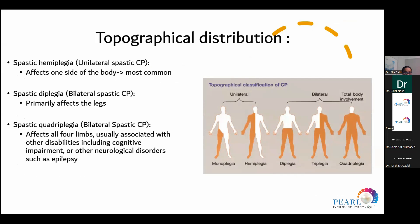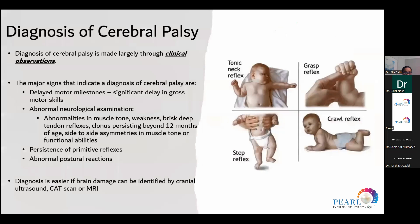The most common type of spasticity is spastic hemiplegia, seen in patients with strokes, affecting one side. Spastic diplegia is seen more in patients with prematurity, affecting both lower limbs. Spastic quadriplegia affects all four limbs and is sometimes associated with cognitive or other neurological disorders; the main causes are hypoxic ischemic changes or traumatic brain injury. Diagnosis of cerebral palsy is clinically based, with patients referred due to delayed motor milestones, abnormal neurological examination, persistence of primitive reflexes, or abnormal postural reactions. Diagnosis is easier when brain abnormalities can be identified by neuroimaging.